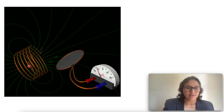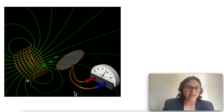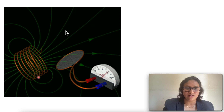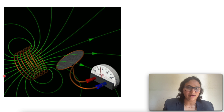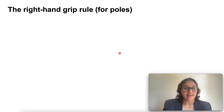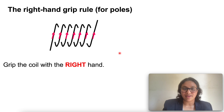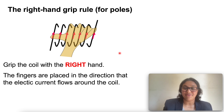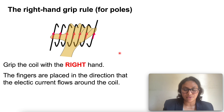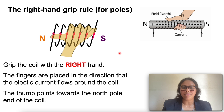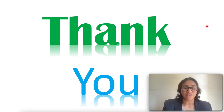This is the diagram representation of a solenoid. As you can see, the magnetic field lines are concentric circles at the ends, and at the center of the circular loop they appear as straight lines. The right hand grip rule states: grip the coil with the right hand, the fingers are placed in the direction that electric current flows around the coil, and the thumb points towards the north pole end of the coil.